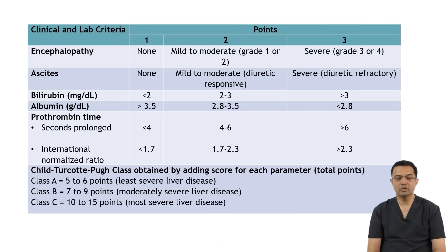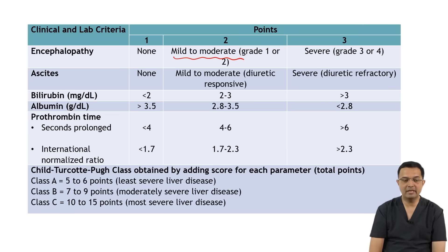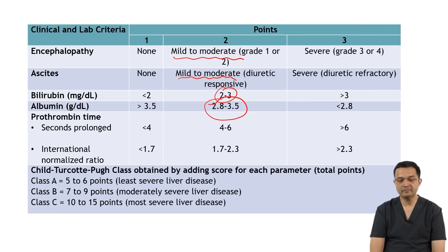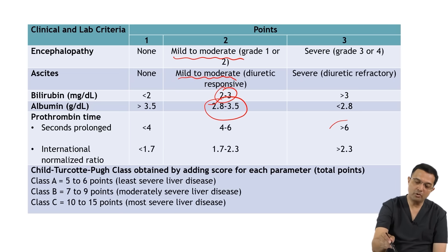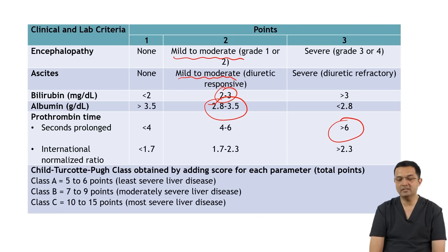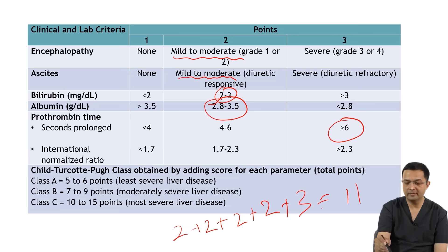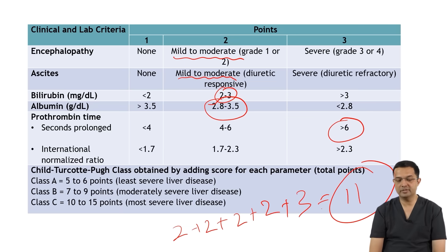Coming to the question: the patient has mild to moderate hepatic encephalopathy (score 2), mild to moderate ascites (score 2), bilirubin between 2 to 3 (score 2), and albumin between 2.8 to 3.5 (score 2). His prothrombin time is 36 seconds with control 12 seconds, so the prolongation is more than 6 seconds (score 3). Total: 2+2+2+2+3 = 11. That is the correct score.